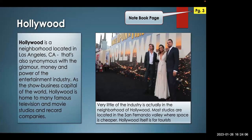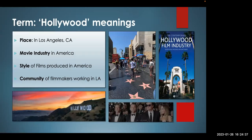That brings us to a discussion of the film industry. What is Hollywood? Hollywood is a neighborhood located in Los Angeles, California, also synonymous with the glamour, money, and power of the entertainment industry. As the show business capital of the world, Hollywood is home to many famous television and movie studios and record companies. The term Hollywood has a few different meanings: it's a place, it's the movie industry in America, it's also the style of films produced in America, and it refers to the community of people who work in the industry and make the films.